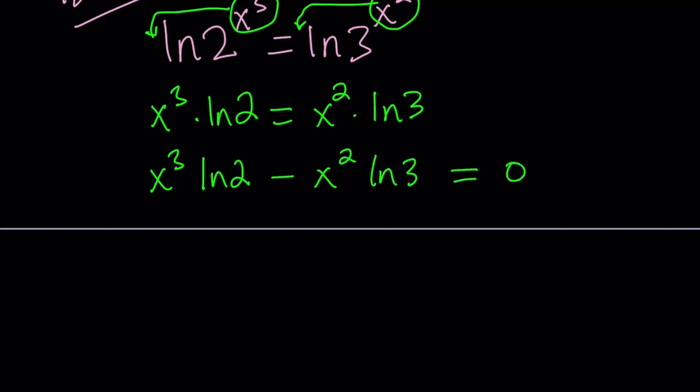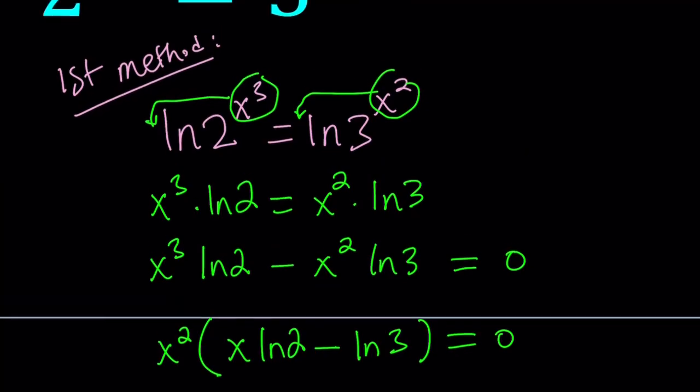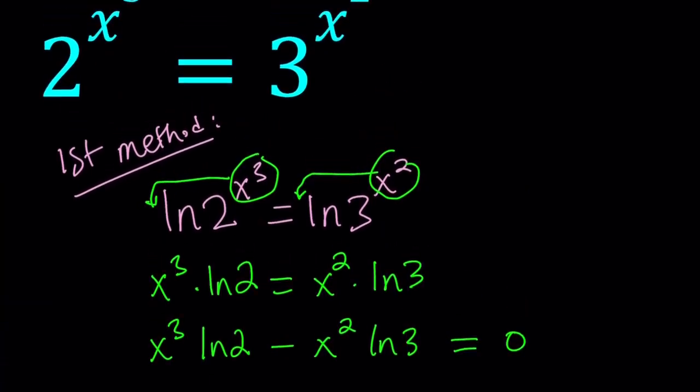We can factor out x squared here since it's a common factor. And that gives us x times ln 2 minus ln 3 equals 0. So we ln both sides. That didn't really change the domain because x is in the exponent, so it can be positive or negative.